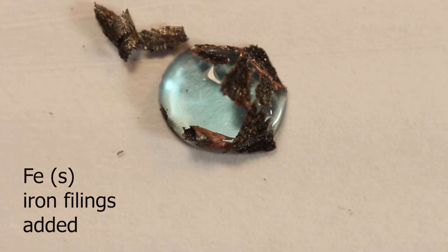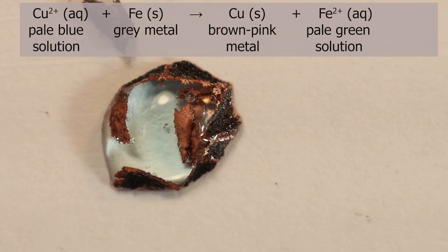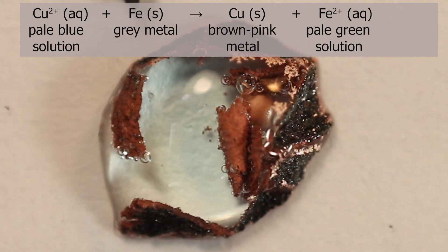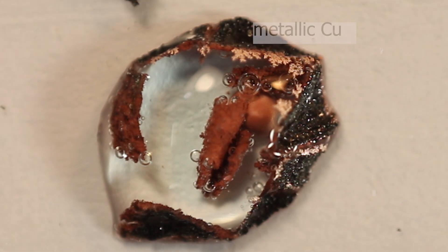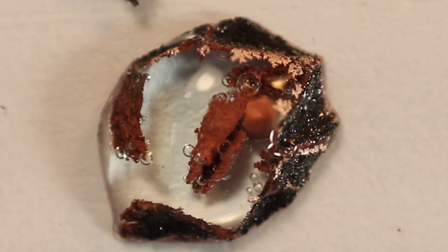Iron metal is above copper in the reactivity series, so it is displacing copper II ions from solution. Iron atoms are oxidized and copper II ions are reduced into copper metal. So formation of brown or pink metal, positive result for copper II ions on addition of iron filings.